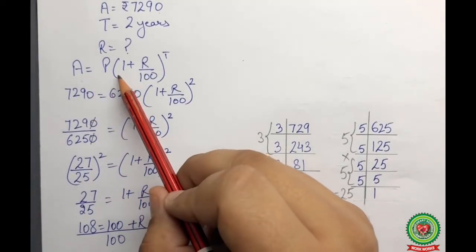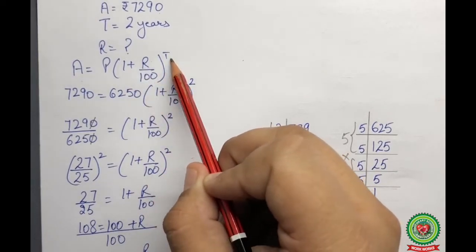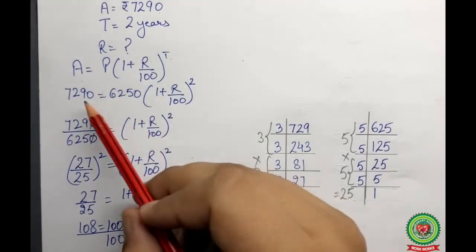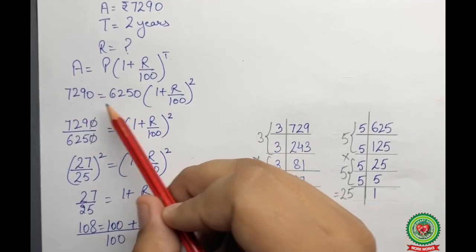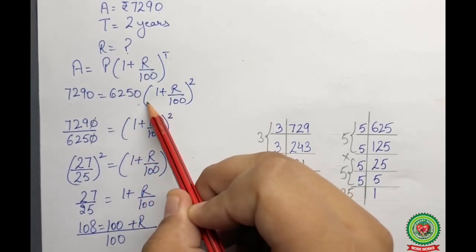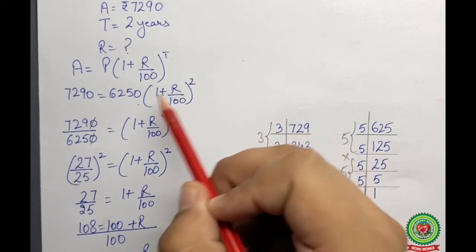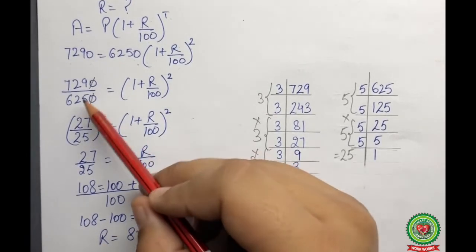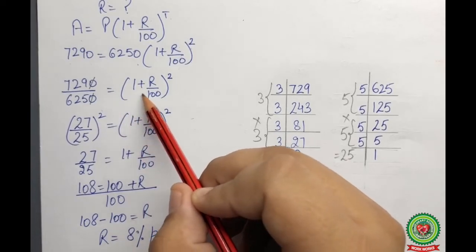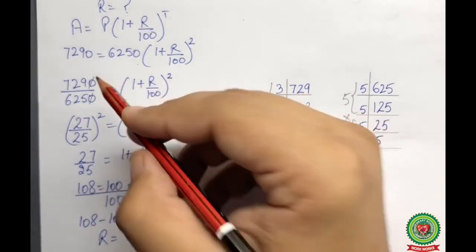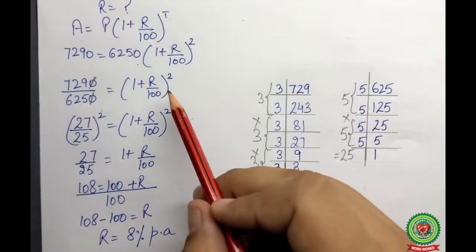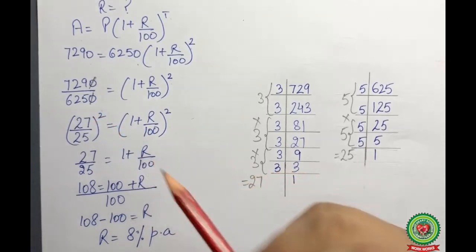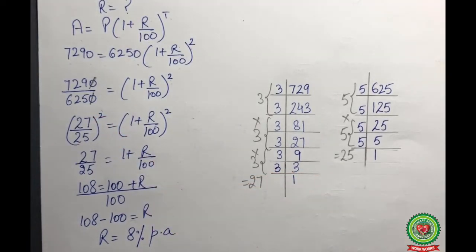Applying the formula: Amount = Principal × (1 + r/100)^t. Substituting: 7,290 = 6,250 × (1 + r/100)^2. Shifting 6,250 gives 7,290/6,250 = (1 + r/100)^2. After cancelling the trailing zeros, the right-hand side has a power of 2, so we need to express the left-hand side also as a perfect square, either by recalling squares or using prime factorization.